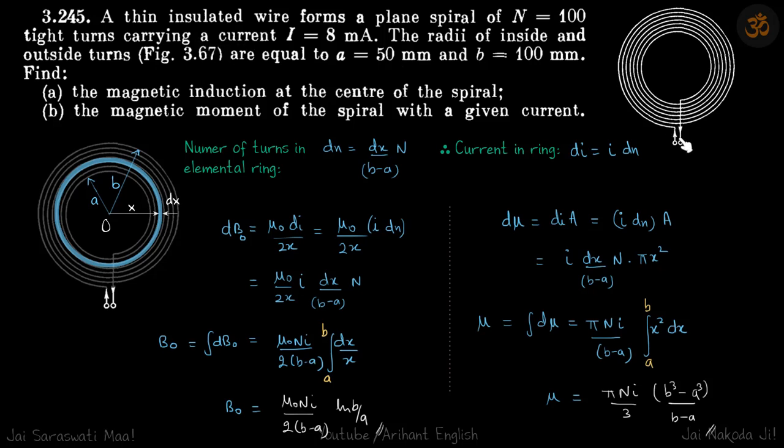Here a wire is given which loops into concentric loops that become smaller and smaller in radius, and eventually you take the current out. We are supposed to find the field and the magnetic moment at the center of this spiral current.